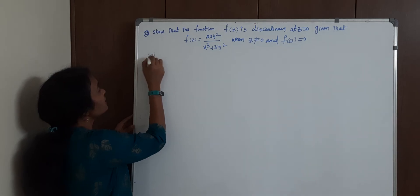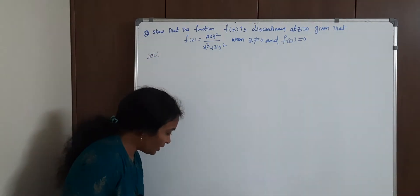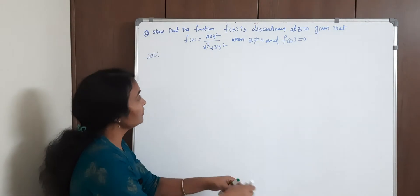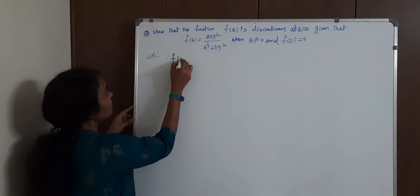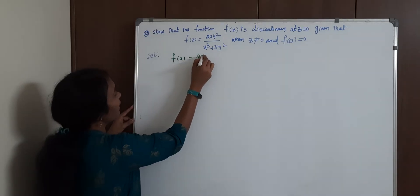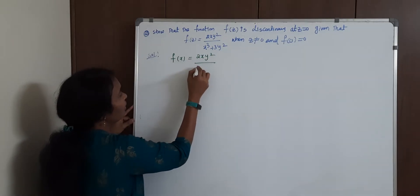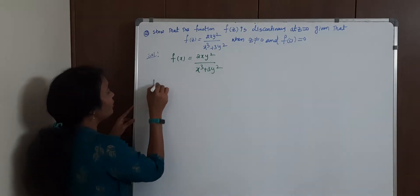First of all, let's do this quickly. Here, what is our function? Our function is f(x) = 2xy² / (x³ + 3y²).